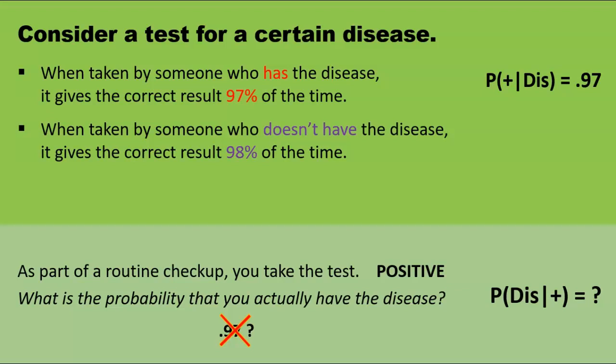While we're here, let's go ahead and translate the second bullet point into a conditional probability statement. The probability that the test is negative, given that the person taking it does not have the disease, is 0.98.